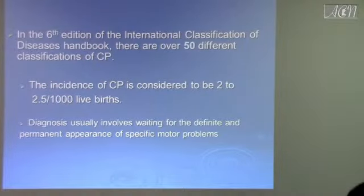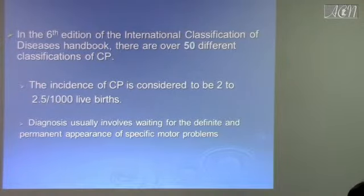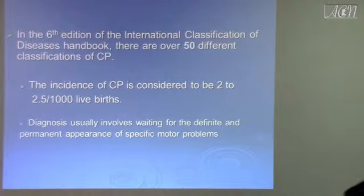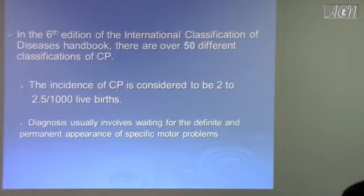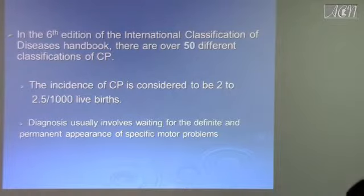In the sixth edition of the International Classification of Diseases Handbook, there are over 50 different classifications of CP. The incidence of CP is considered to be 2 to 2.5 per 1,000 live births, and the diagnosis usually involves waiting for the definite and permanent appearance of specific motor problems. Don't diagnose CP by 4 months or 3 months of age, because the main output from the brain is mainly inhibitory for the first six months. A lot of the time you will see the patient is hypotonic, even though the MRI shows severe hypoxic ischemic encephalopathy. By one year of age, you will find spasticity and signs of hypertonia will appear.